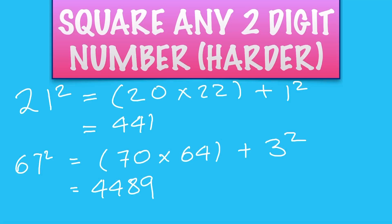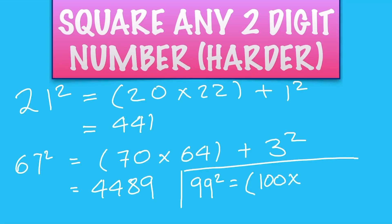This is a good one to practice and impress people: a number in the 90s. Let's do 99 squared. Go up to 100, up by 1, then down by the same amount to 98, and the difference is 1, so add 1 squared. 100 times 98 is 9800, add 1 is 9801. And we're done.